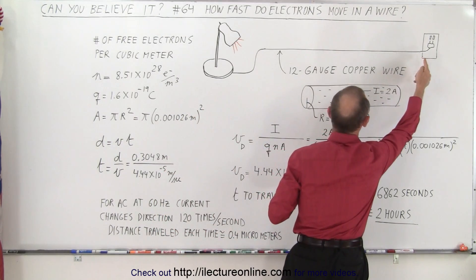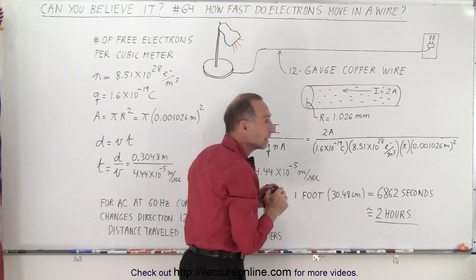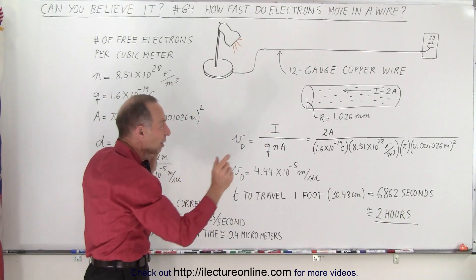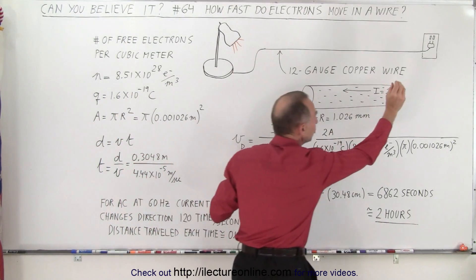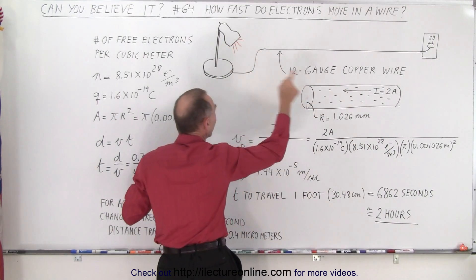When one electron enters the wire from the outlet, one electron will go through the light bulb almost instantaneously. So it seems like they travel really fast, but it's essentially all the electrons moving up just a little bit, pushing the few that are already there through the light bulb.